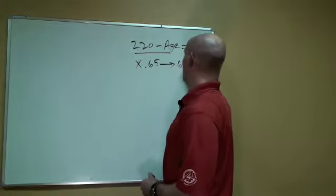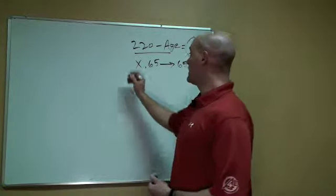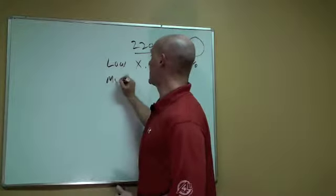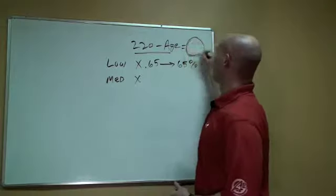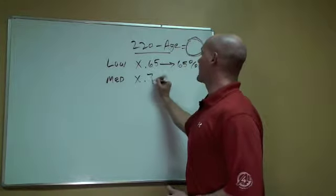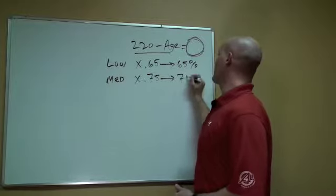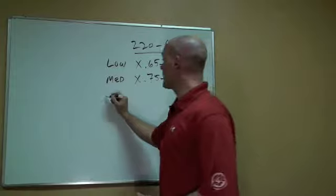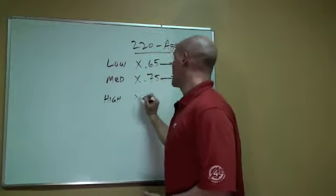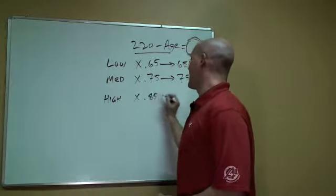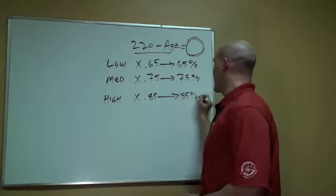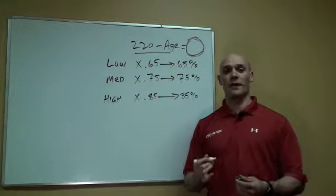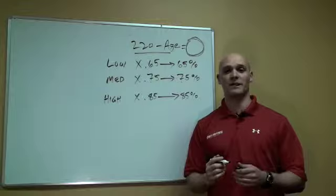To find your medium zone, we're going to times this number by .75. That's going to give you 75% of your max heart rate. From there, we go to the high zone times .85. That's going to give you 85% of your max heart rate, which is 220 minus age. So from there, you'll be able to calculate your three different types of days.